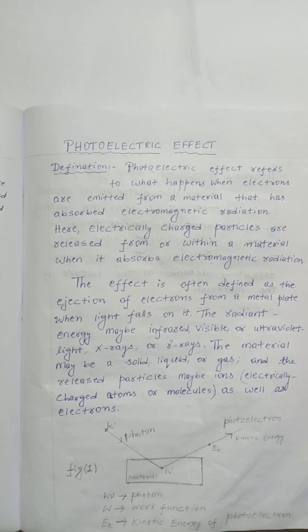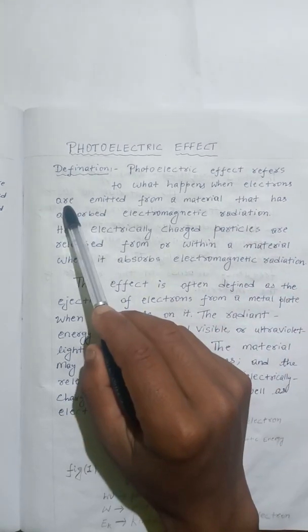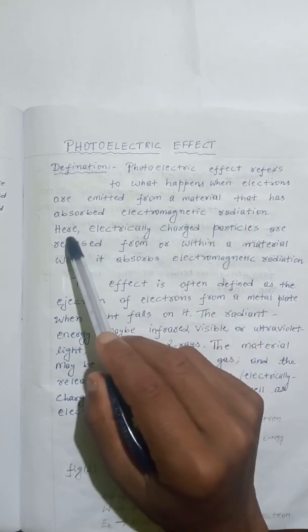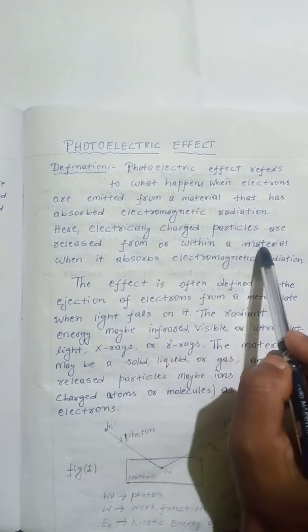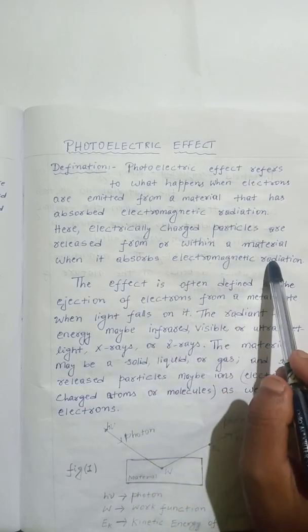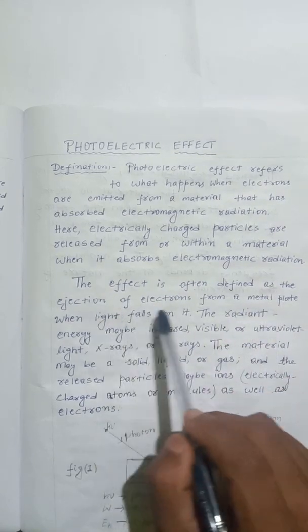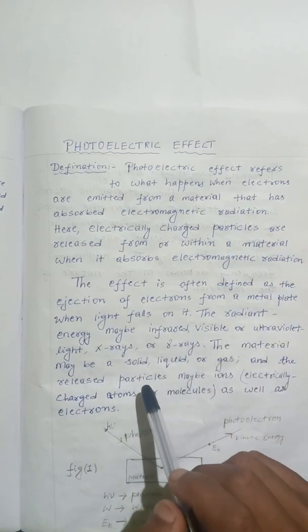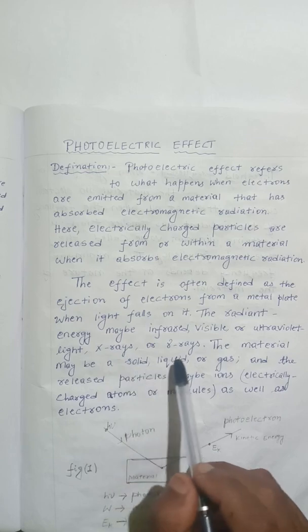What is the photoelectric effect? Let's look into the definition. Photoelectric effect refers to what happens when electrons are emitted from a material that has absorbed electromagnetic radiation. Here, electrically charged particles are released from or within a material when it absorbs electromagnetic radiation. In simple words, the photoelectric effect is often defined as the ejection of electrons from a metal plate when light falls on it. The radiant energy, that is the incident light, may be infrared, visible, or ultraviolet light.